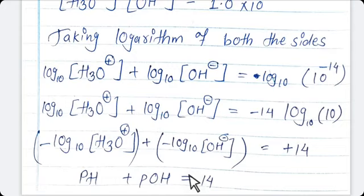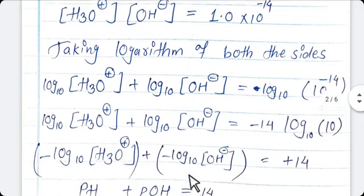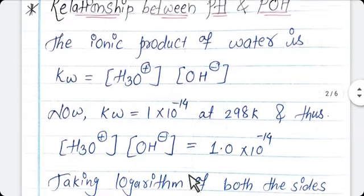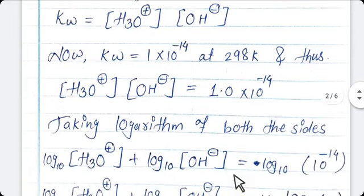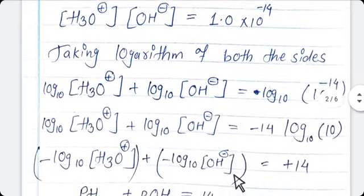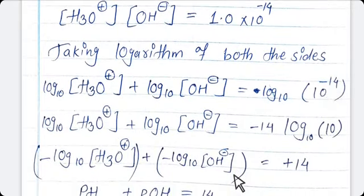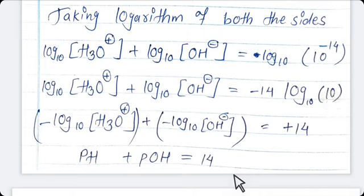To derive the relation between pH and pOH, we first use the formula of the ionic product of water, put in its value, take the logarithm of the equation, then multiply by −1, and substitute values. So the relationship is pH + pOH = 14.